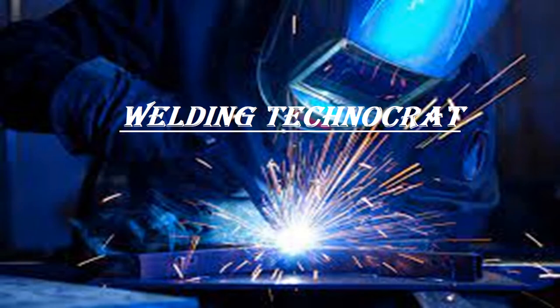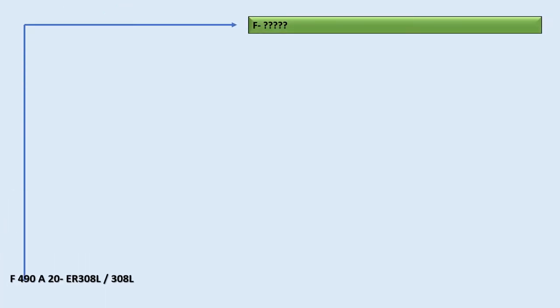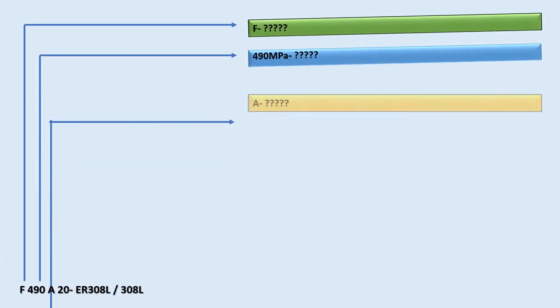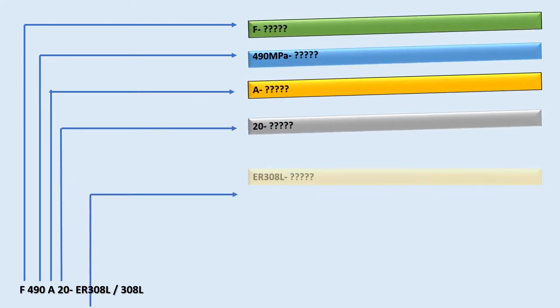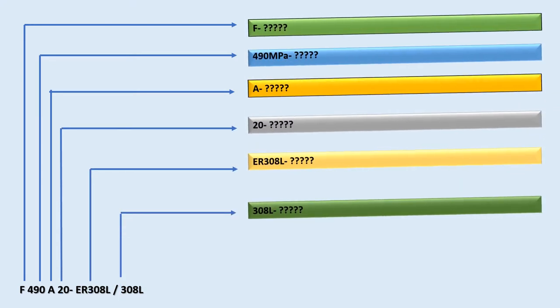Welcome to the Welding Technocrat YouTube channel. Let us now understand the newly added SFA number 5.39, a specification of flux and electrode combinations for SAW and ASW joining and surfacing of stainless steel and nickel alloys. Here you can see the designator for SAW flux-electrode combination.